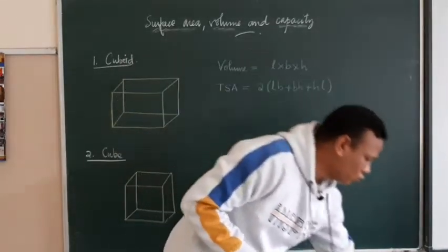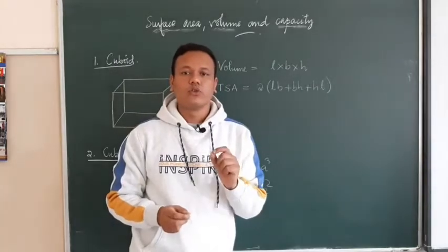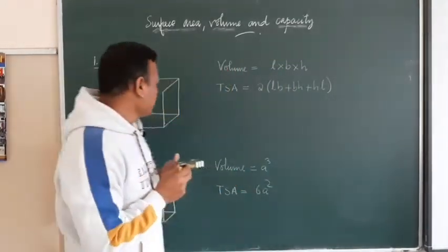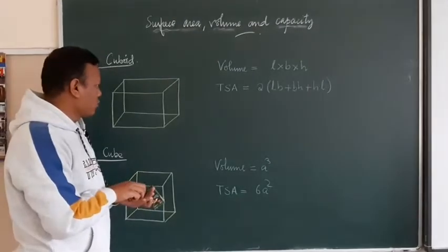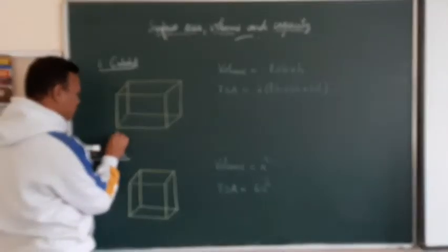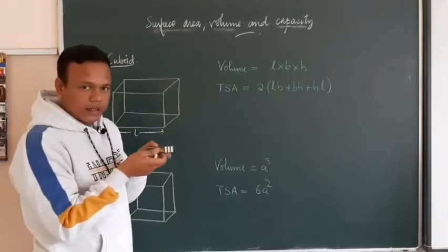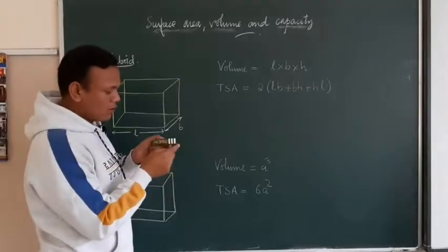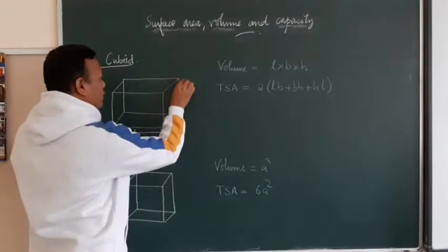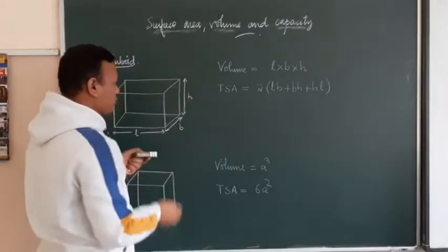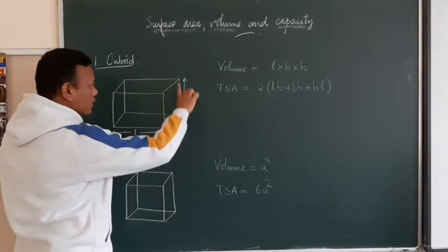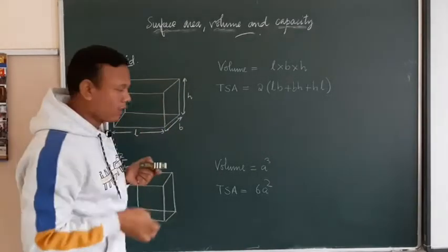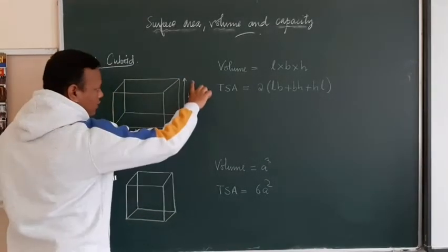Let us begin with the first topic for the day — we are going to learn the formula of cuboid and cube. The shape of a cuboid is somewhat like this. I have drawn the cuboid for you. Let me call this my length, represented by small l. This is my breadth, represented by small b. And this is my height, represented by small h. The opposite faces — breadth, height, and length — are equal to each other.